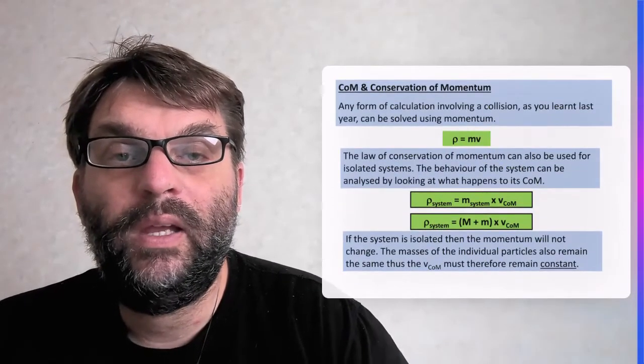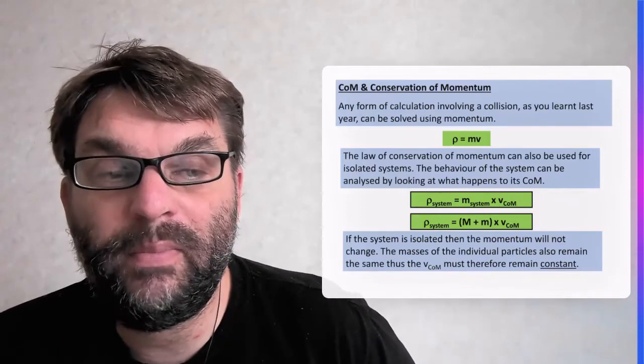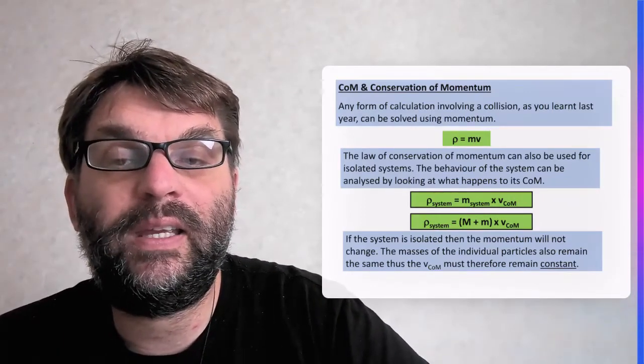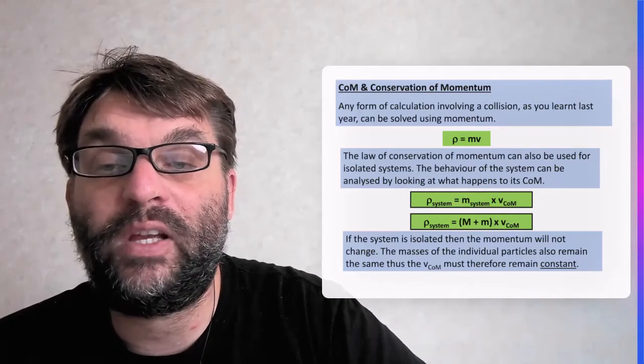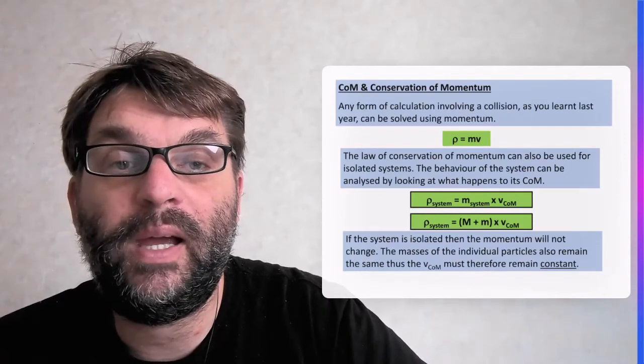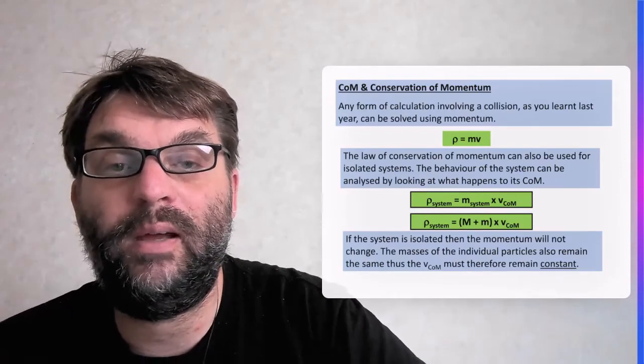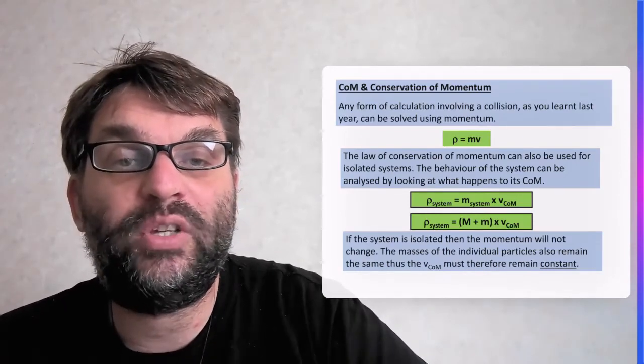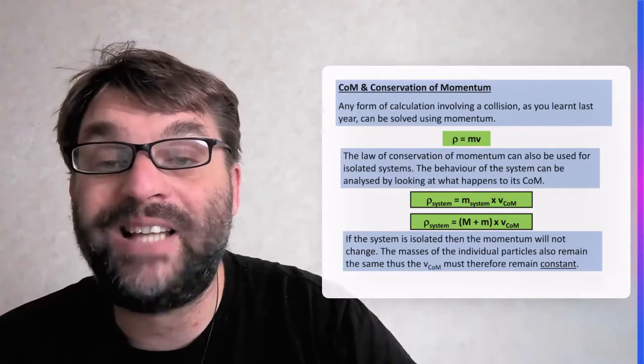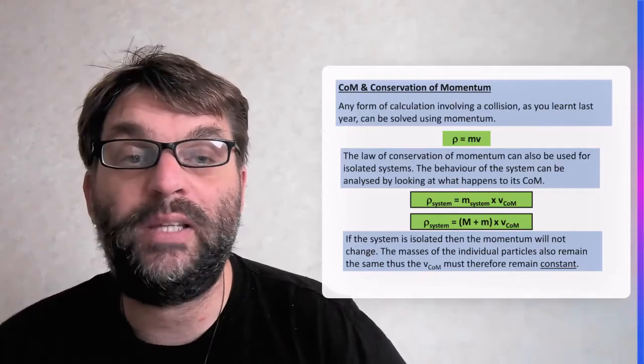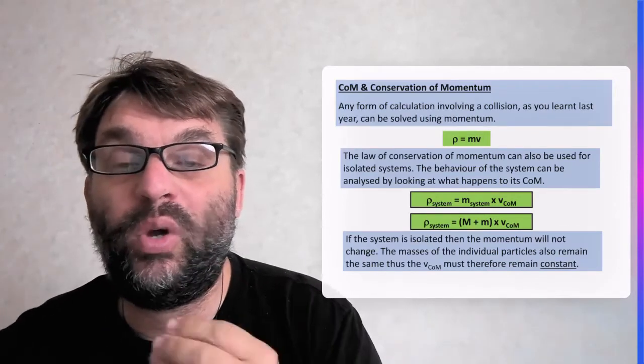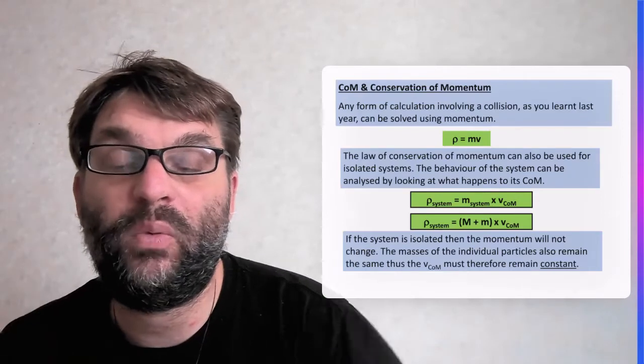Centre of mass and conservation of momentum is also critical. So any form of calculation involving the colliding of two objects - you learnt last year that momentum equals mass times the velocity. And it also says that the law of conservation can be used for these isolated systems of two objects. The behaviour of the system can be analysed by looking at what happens to the centre of mass that we've just looked at.